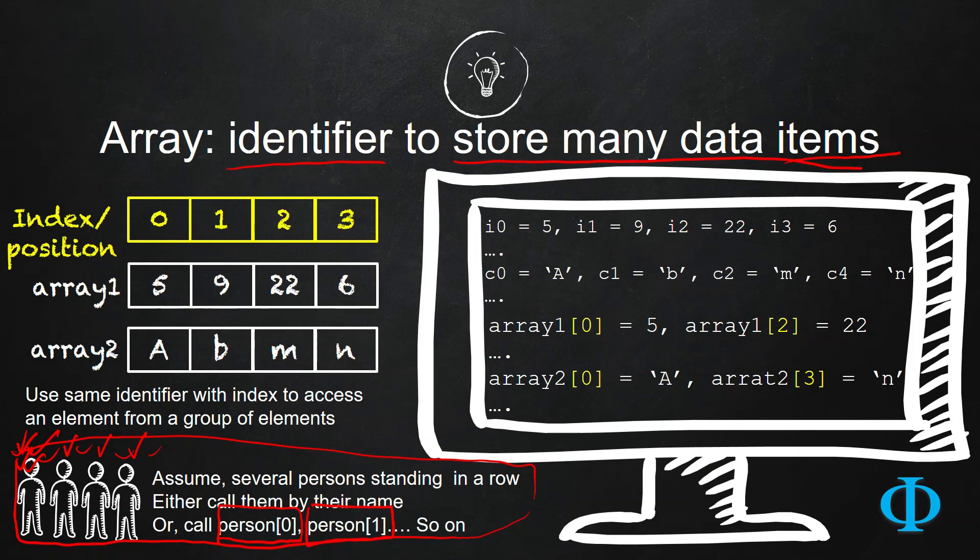Here, person is just like a variable name. So here I have shown two different examples with array1 and array2. Just like this person, I have used the variable name called array1 or array2 for another array.